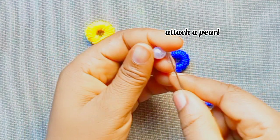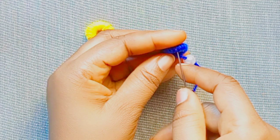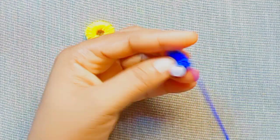Here now, attach a medium sized bead right at the center of the woolen design, then sew to secure.